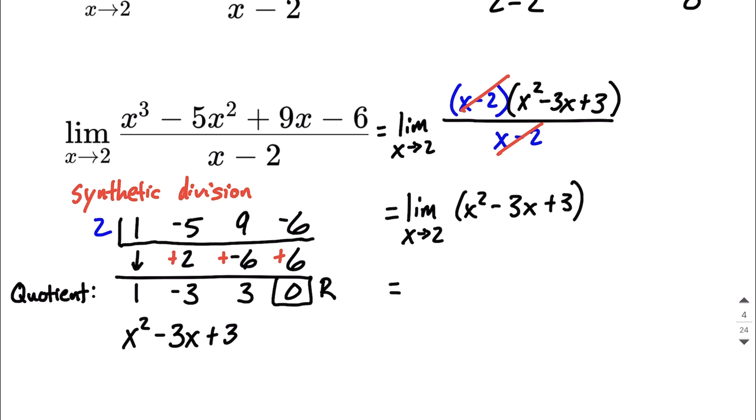And then finish this up by replacing each of our x's with 2. So 2 squared minus 3 times 2 plus 3. This is going to be 4 minus 6 plus 3. So negative 2 plus 3 equals positive 1. And as we look at this, sure enough, that is going to be the limit of this function.